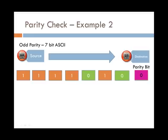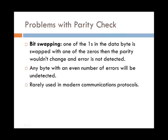You can see that it is a fairly simplistic form of error checking method, and one of the problems is that bit swapping can occur. If one of the 1's in the data byte is swapped with one of the 0's, then the parity wouldn't change and the error is not detected. Any byte with an even number of errors will be undetected, and it is rarely used in modern communication protocols because it is only 50% accurate.